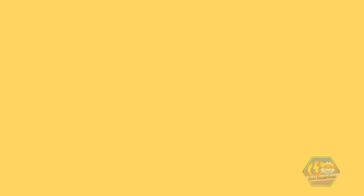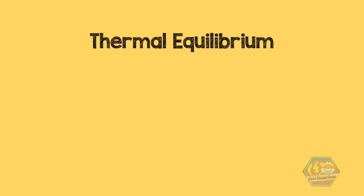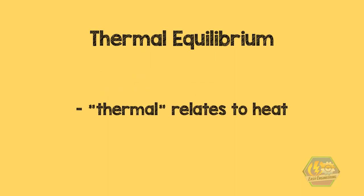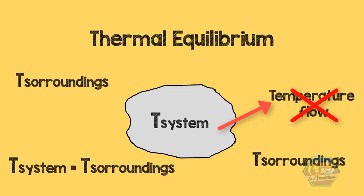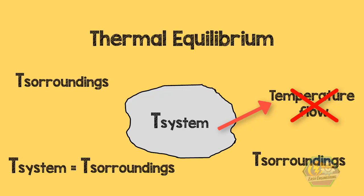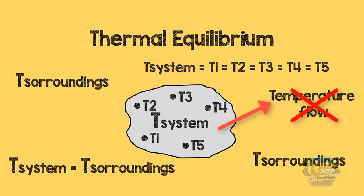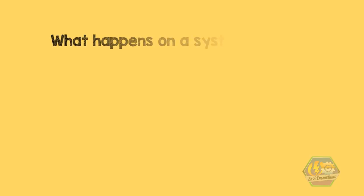The final requirement is thermal equilibrium. The word thermal relates to heat or temperature. This means there is no heat transfer between the system and surroundings — the temperature of the system and the surroundings is the same. Additionally, the temperature at all points of the system must not change; all points must have the same value, meaning no heat flow is happening within the system.